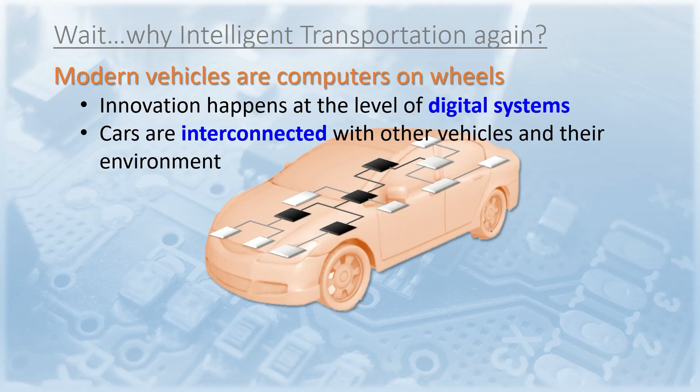Why did we combine computer engineering with intelligent transportation in the first place? The reason lies in modern vehicles, which are literally computers on wheels, in which most of the innovation happens at the level of digital systems. Moreover, today cars are more and more interconnected with each other and their environment. As we know, a computer uses hardware and software — so where do we find those in a vehicle?